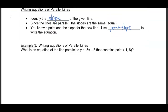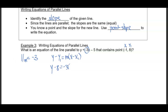Writing the equations of parallel lines: What is the equation of the line parallel to y equals negative 3x minus 5 that contains the point (negative 1, 8)? Because it's parallel, the slope is negative 3. Using point-slope form: y minus 8 equals negative 3 times (x plus 1), which gives y minus 8 equals negative 3x minus 3. Adding 8 to both sides: y equals negative 3x plus 5.